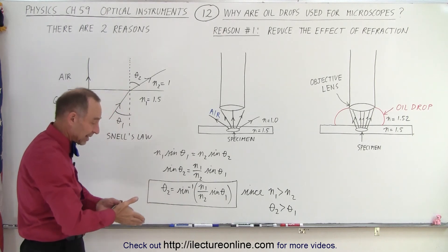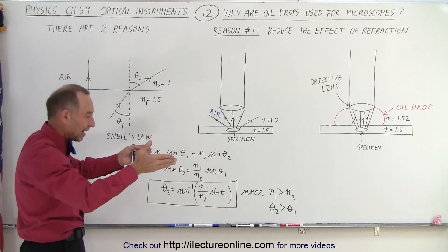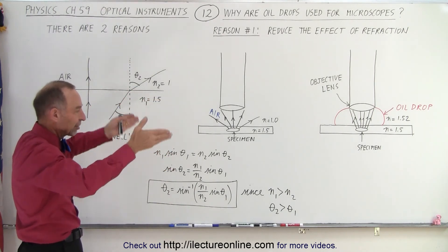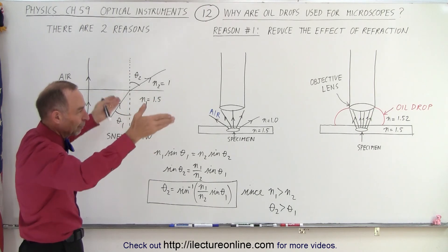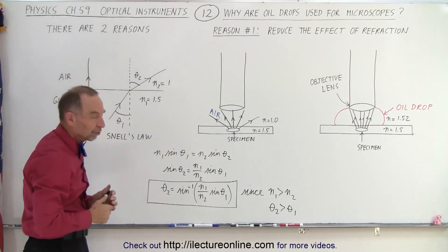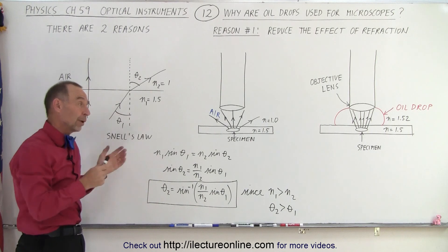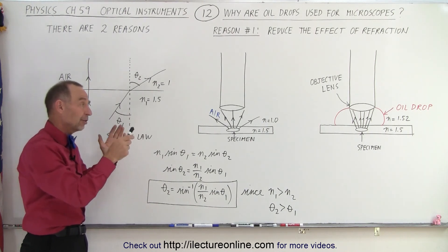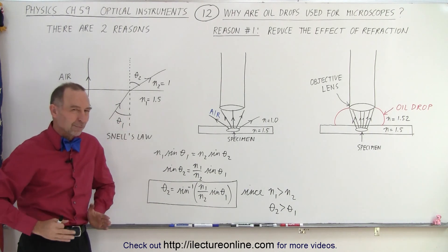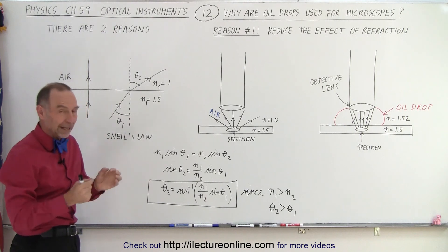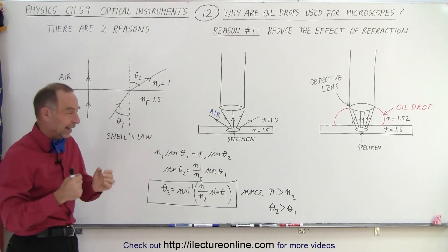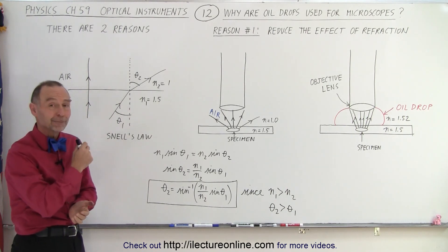Whenever you have the light that goes off from the specimen off at an angle, there'll be a larger refractive angle, the light will bend away, and that's simply a result of Snell's law. So one of the reasons why we use oil drops is to reduce that effect so that more light will enter into the microscope and the images will be sharper and have a higher resolution. And that is how it's done.